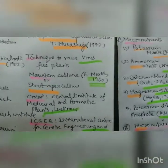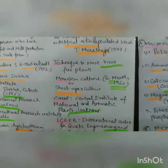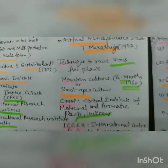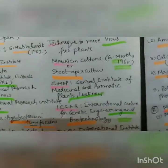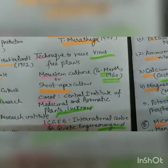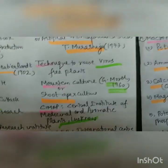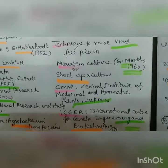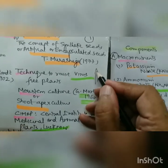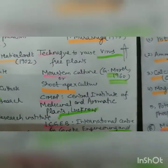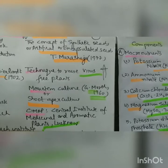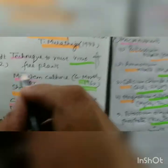Meristem culture is used to raise virus-free plants. When cultures are infected with virus, the shoot apex meristem is the point where virus cannot reach because xylem vessels do not extend that far. We can perform meristem or shoot tip apex culture to retrieve virus-free plants. This technique was first done by G. Morel in 1960 using the orchid Cymbidium.